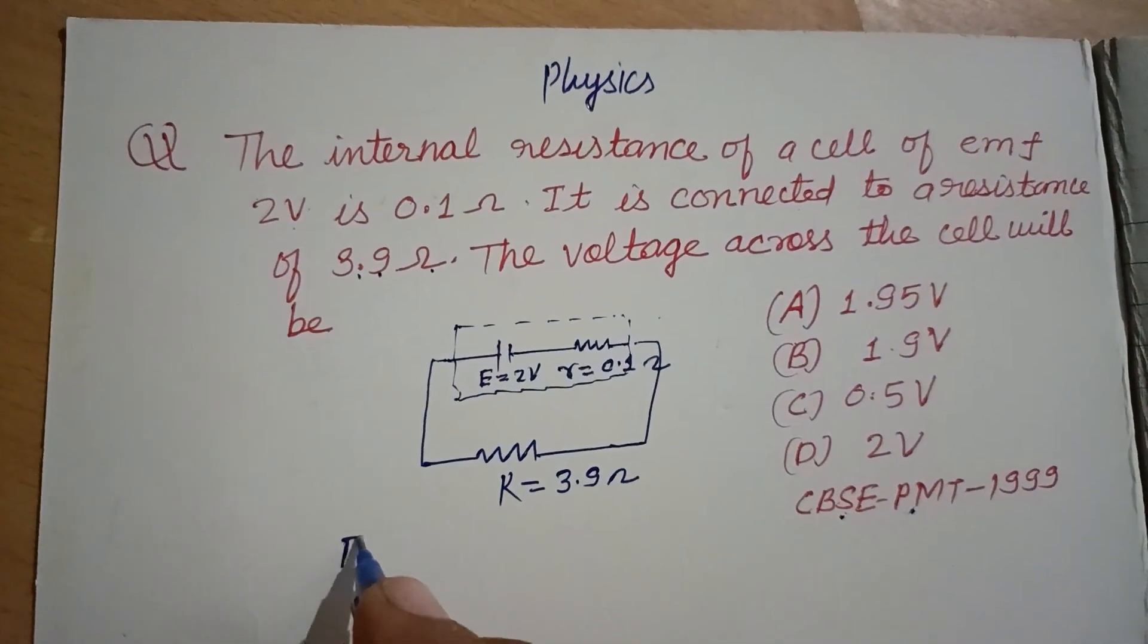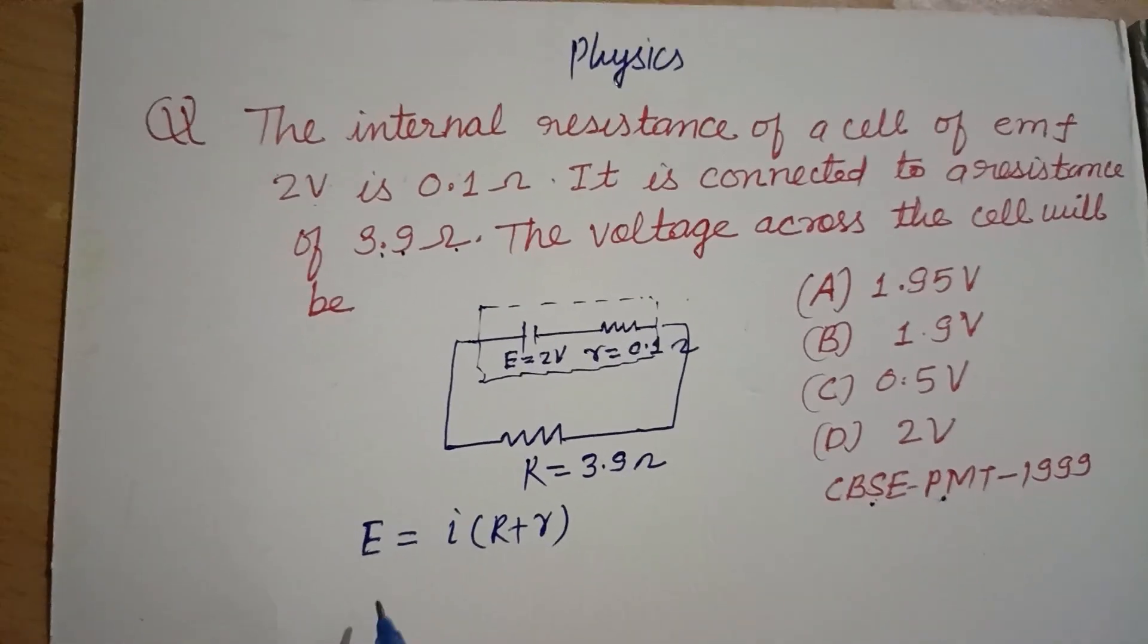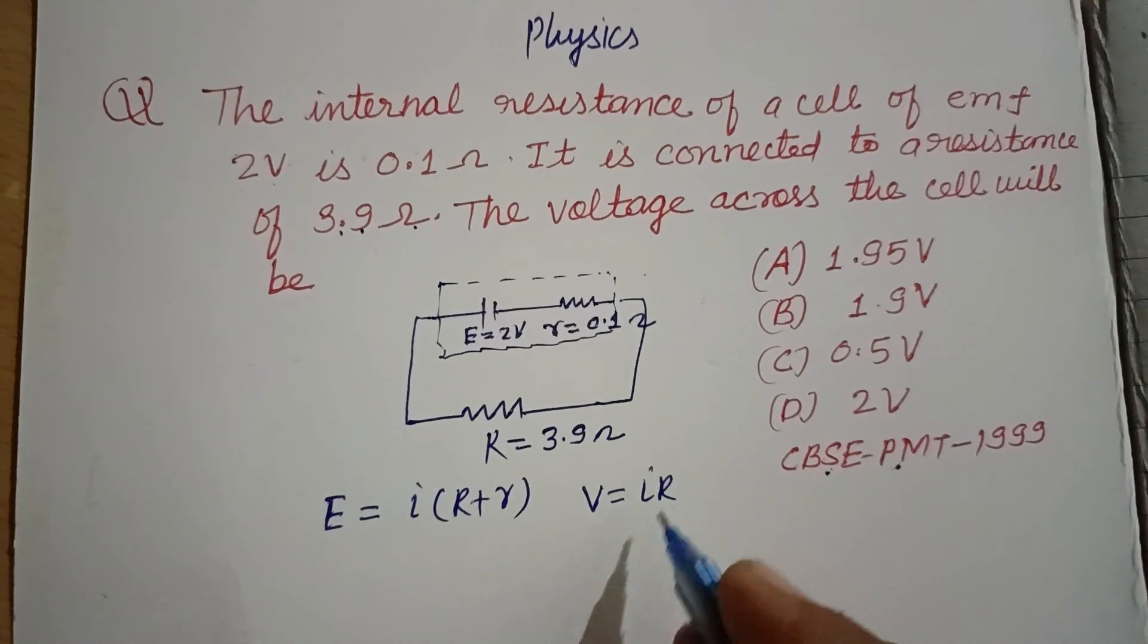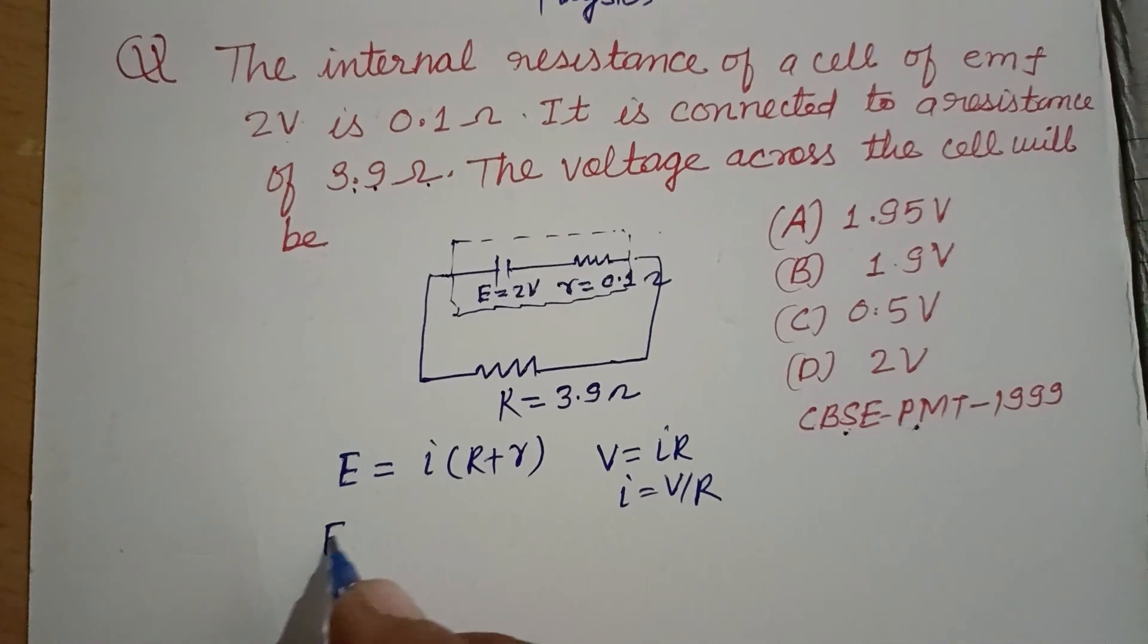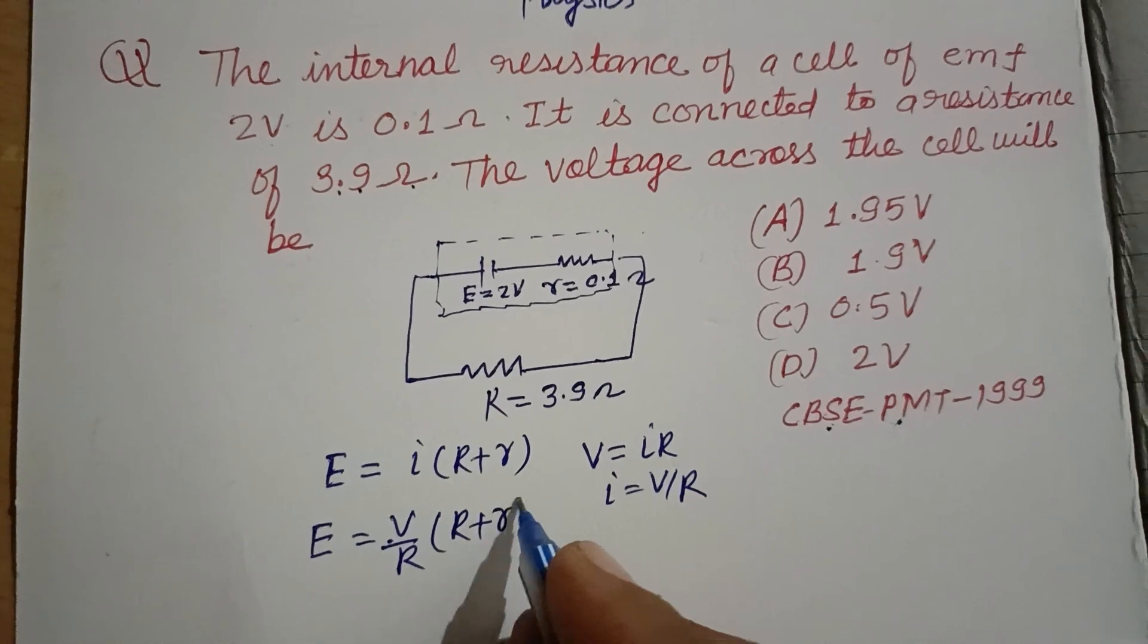So you know that E equals I into R plus r. And by Ohm's law V equals IR. Therefore I equals V upon R. So putting the values V upon R, R plus r.